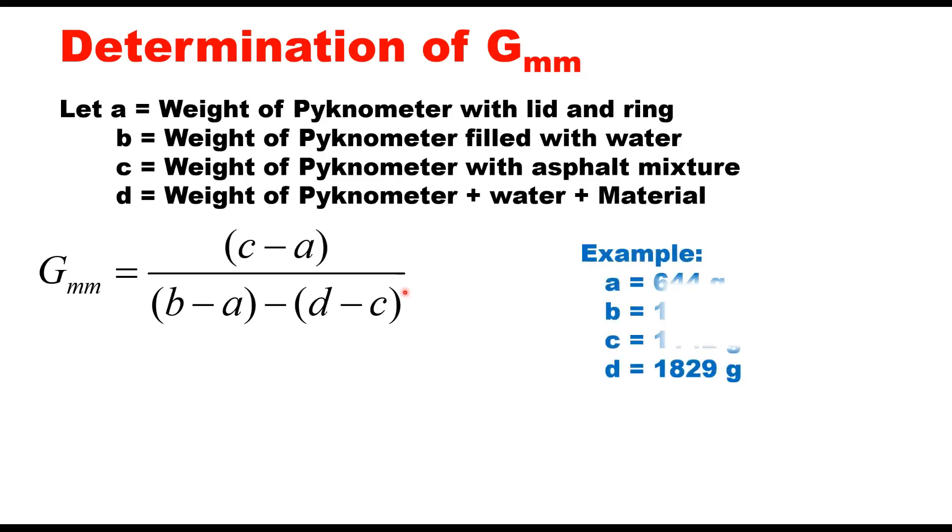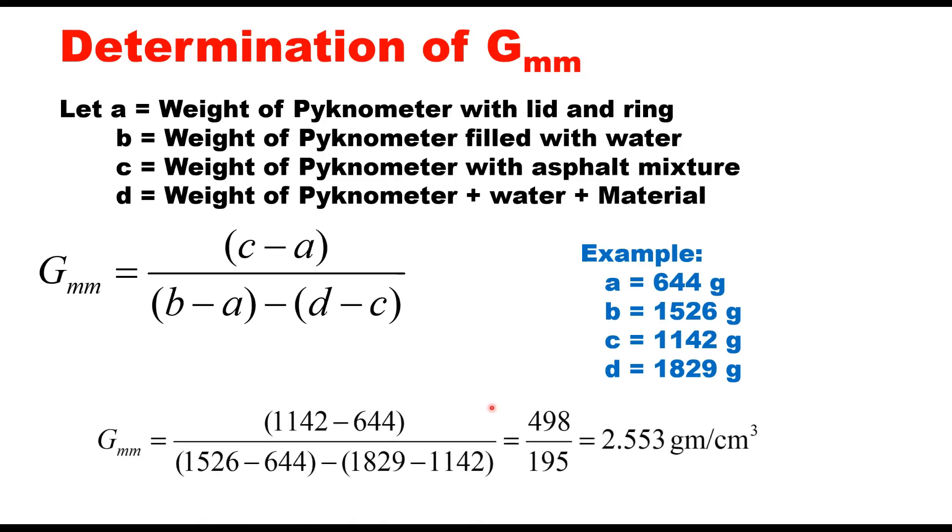Again if we take an example, let us say A is 644 grams, B is 1526 grams, C is 1142 grams, and D is 1829 grams. Then this GMM can be estimated using this equation, that is 498 divided by 195, which equals 2.553 grams per centimeter cube.